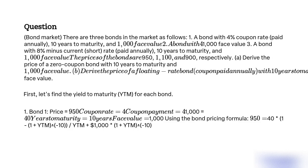Bond 1: Price equals $950. Coupon rate equals 4%, so coupon payment equals 4% × $1,000 = $40. Years to maturity equals 10 years. Face value equals $1,000. Using the bond pricing formula: $950 = $40 × (1 − (1 + YTM)^−10) / YTM + $1,000 × (1 + YTM)^−10.